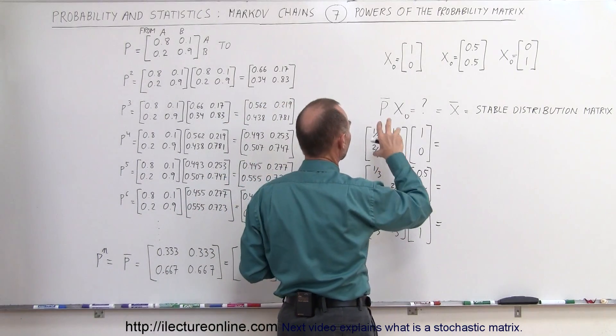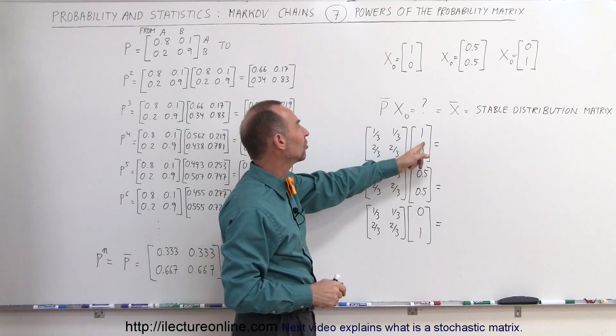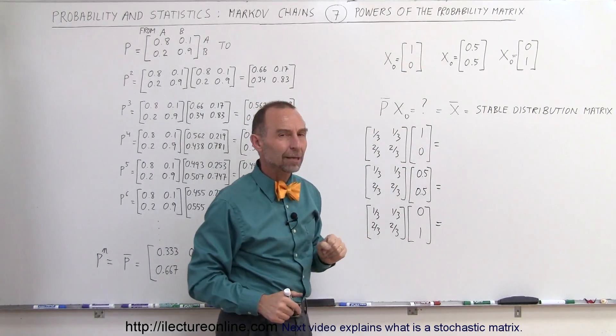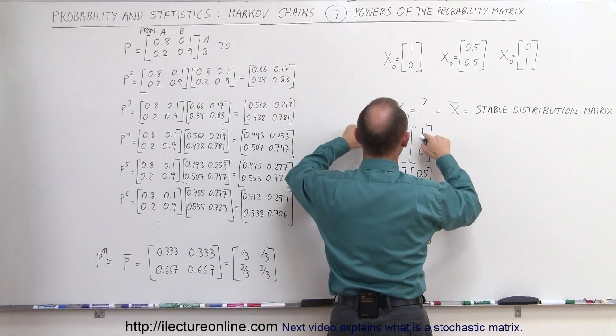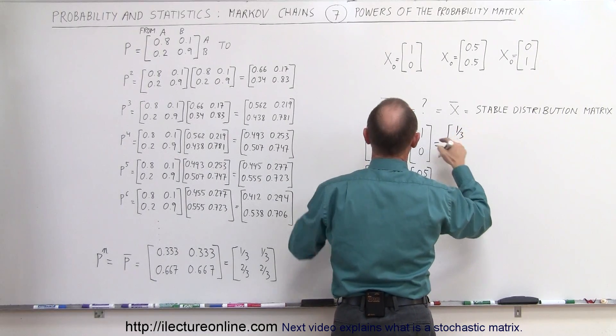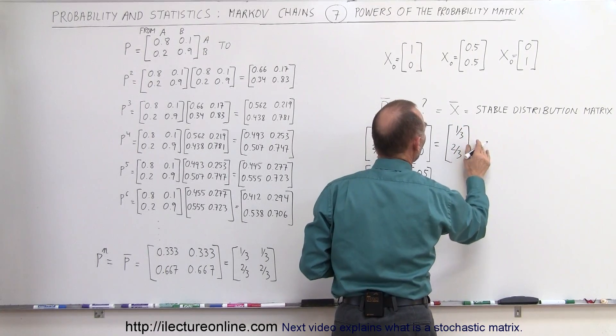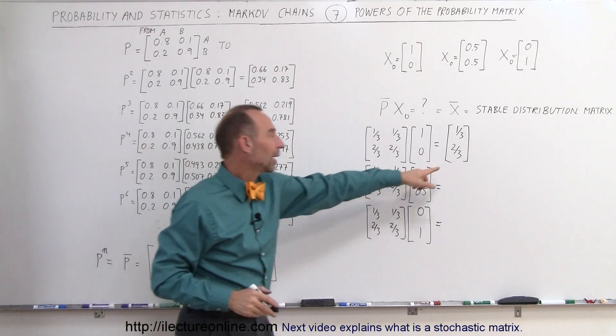So here we're going to multiply, let's say P to the twelfth power, which is basically equal to that, times the initial state, when the initial state is one for A, and zero for B. Okay, let's try that. So we get one-third times one, times one-third times zero, so this gives us one-third, and two-thirds times one, times two-thirds times zero, gives us two-thirds. So that means that this will now be the stable distribution matrix, the end state right here, if we do this a number of times through the process.